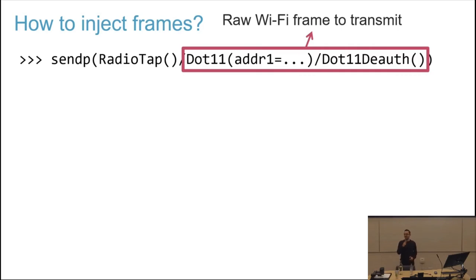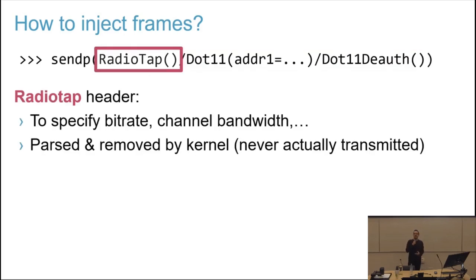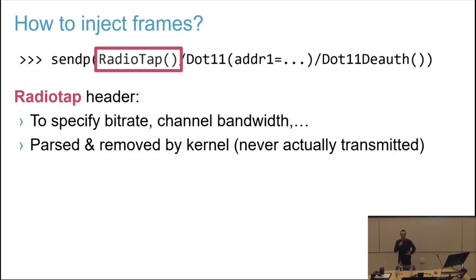You can define the Wi-Fi frame that you want to inject — in this case, this is the authentication frame, because denial of service attacks in Wi-Fi are very common, unfortunately. You can basically construct the frame you want to send. And before that frame, you actually have to prepend a so-called RadioTap header on Linux, which specifies some properties of the frame, for example the bitrate and the channel bandwidth. This meta header will be parsed by the Linux kernel, then stripped away, and it will never actually be transmitted.